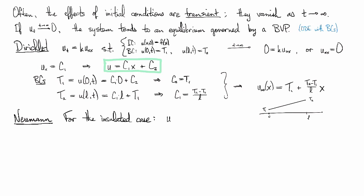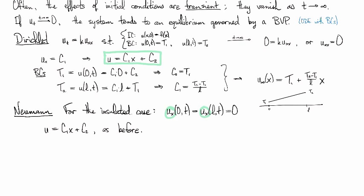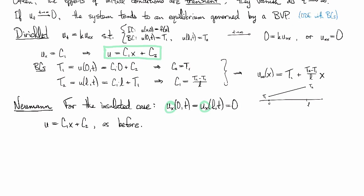In this case, we've got ux(0,t) and ux(L,t) are both going to be set equal to zero. However, we still have the general solution, c1x plus c2, as before. Now this time, since we are looking at the Neumann boundary conditions here, we're going to have to differentiate this solution that we found.